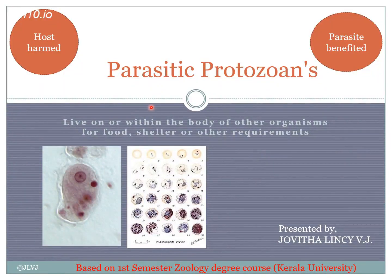Parasitic protozoans. A parasite lives on or within the body of other organisms for food, shelter, or other requirements. These groups cause harm to the host, and it is a one-way relationship where only the parasite is benefited. However, the majority of parasites do not cause lethal effects, because the survival of the host is somewhat related to the survival of the parasites.